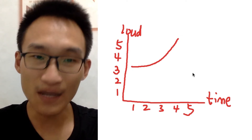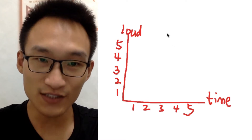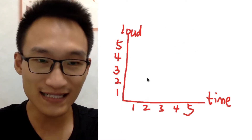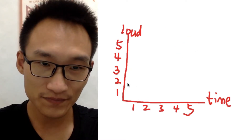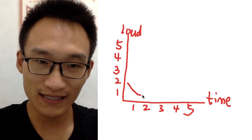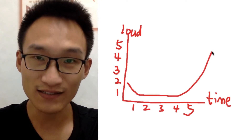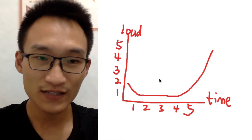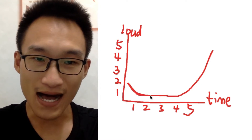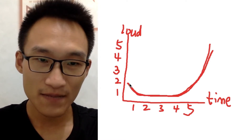The third tone is not really just falling and rising so simply. It's like this: falling a little, then later flat, then later rising, going up. So it's 'ma' — that's the third tone.